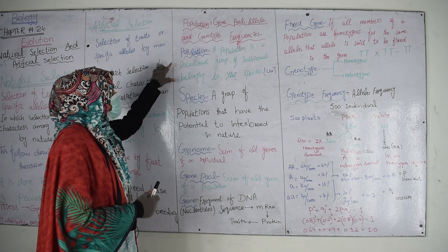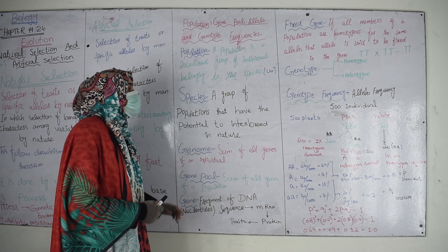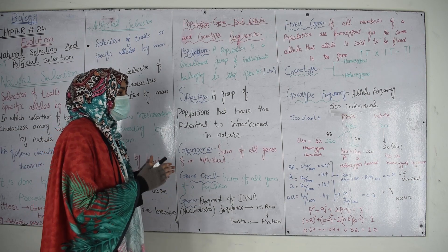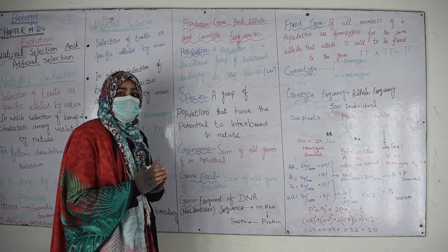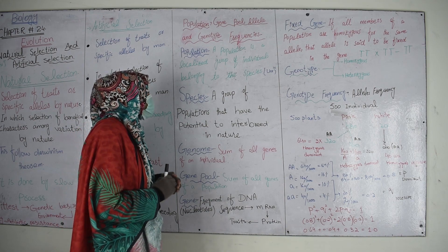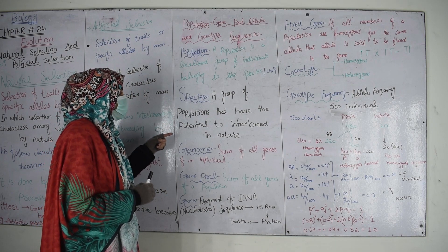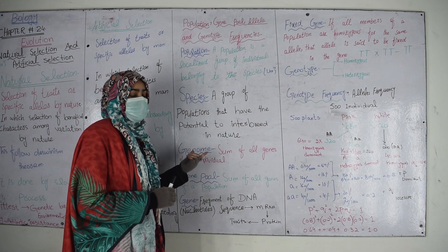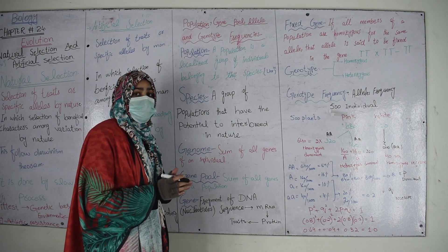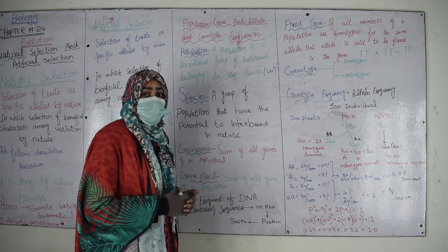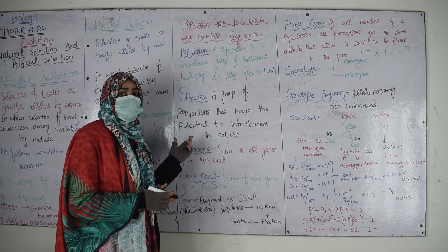What is population? Population is a localized group of individuals belonging to the same species. Or you can say: a number of individuals of a species at the same place at the same time is known as population. Then species — a group of populations that have the potential to interbreed in nature and produce fertile offspring. We call them species.